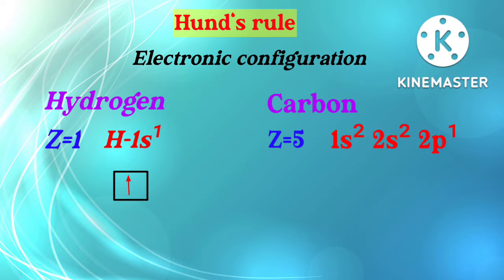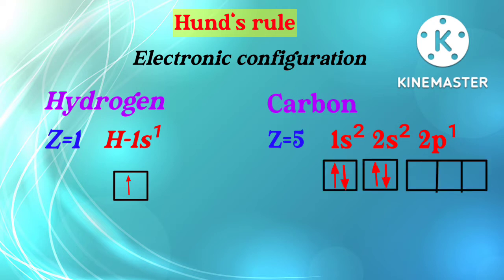Next element is carbon. The atomic number of carbon is 6. The electronic configuration of carbon is 1s2, 2s2, 2p2. So 2 electrons of carbon go into the 1s orbital, then 2 electrons go into the 2s orbital, and the remaining 2 electrons go into the 2p orbital. In the 1s and 2s orbitals, one electron fills in the upward direction and the other electron fills in the downward direction.